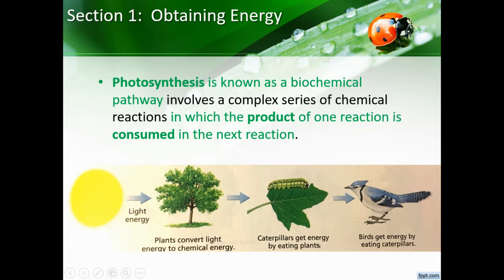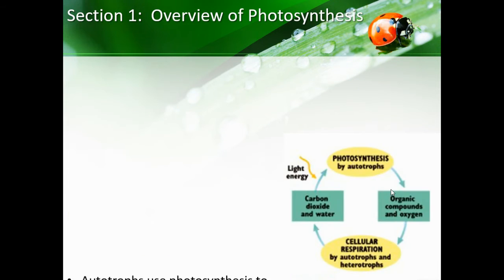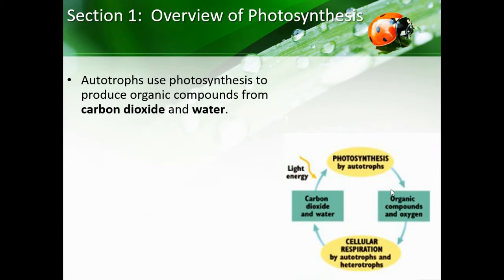Here's an example of a biochemical pathway: sunlight gives off energy that a plant uses to create food. In turn, a caterpillar eats the leaf, so everything the plant made goes into the caterpillar. Everything the caterpillar makes from eating that food then goes into the bird. So everything one organism makes goes into something else — this is a biochemical pathway.